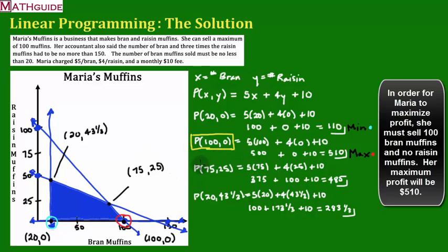So I would have someone write out, Maria must sell 100 bran muffins and no raisin muffins to get a maximum profit of 510.